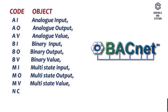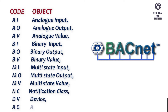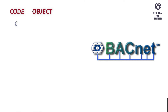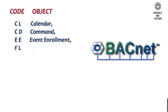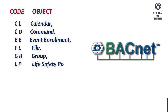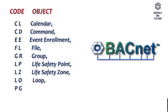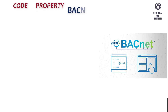MV - Multistate Value, NC - Notification Class, DV - Device, AG - Averaging, CL - Calendar, CD - Command, EE - Event Enrollment, FL - File, GR - Group, LP - Live Safety Point, LZ - Live Safety Zone, LO - Loop, PEG - Program, SC - Schedule, TL - Trend Log.